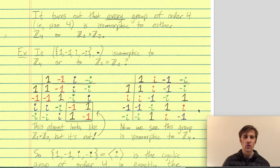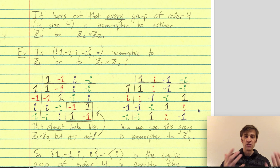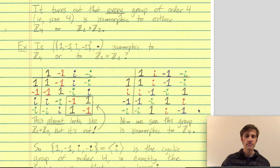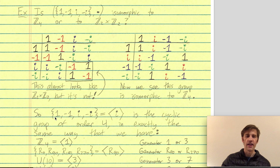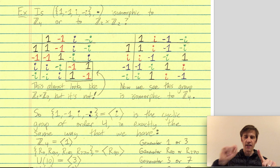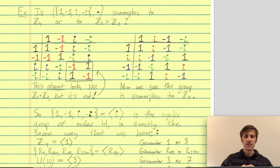How did I know how to reorder the elements to see this isomorphism with Z mod 4? We'll get more practice with that as we go — in general it's a very hard problem; identifying whether two groups are isomorphic is believed to be NP-hard. What's going on here is that the group {1, -1, i, -i} is a cyclic group of order 4, generated by i. The cyclic subgroup generated by i is: i, i² = -1, i³ = -i, i⁴ = 1 — giving back the entire group.